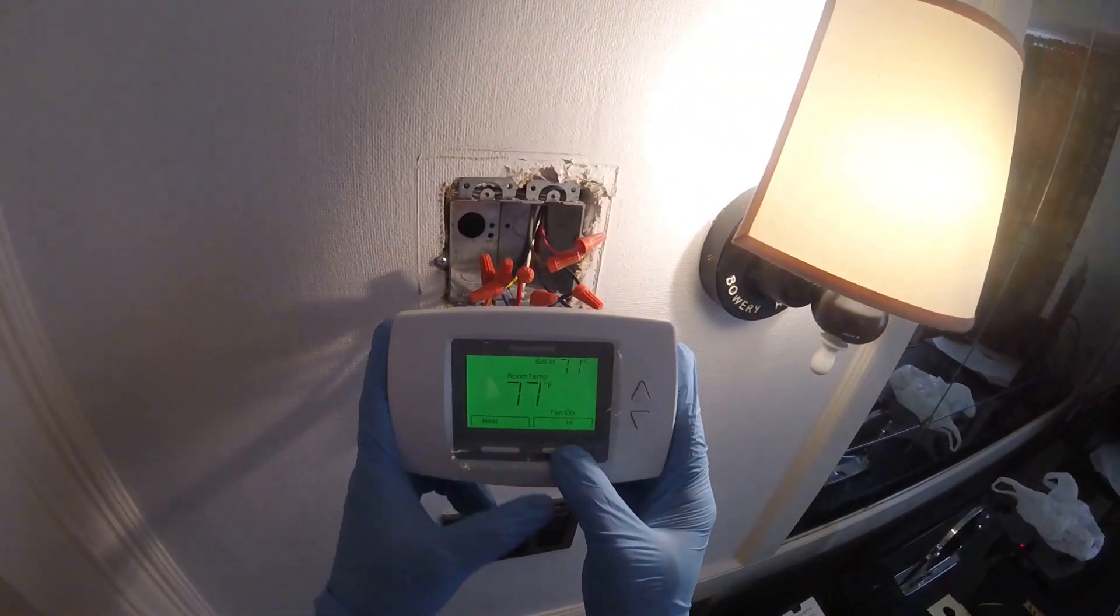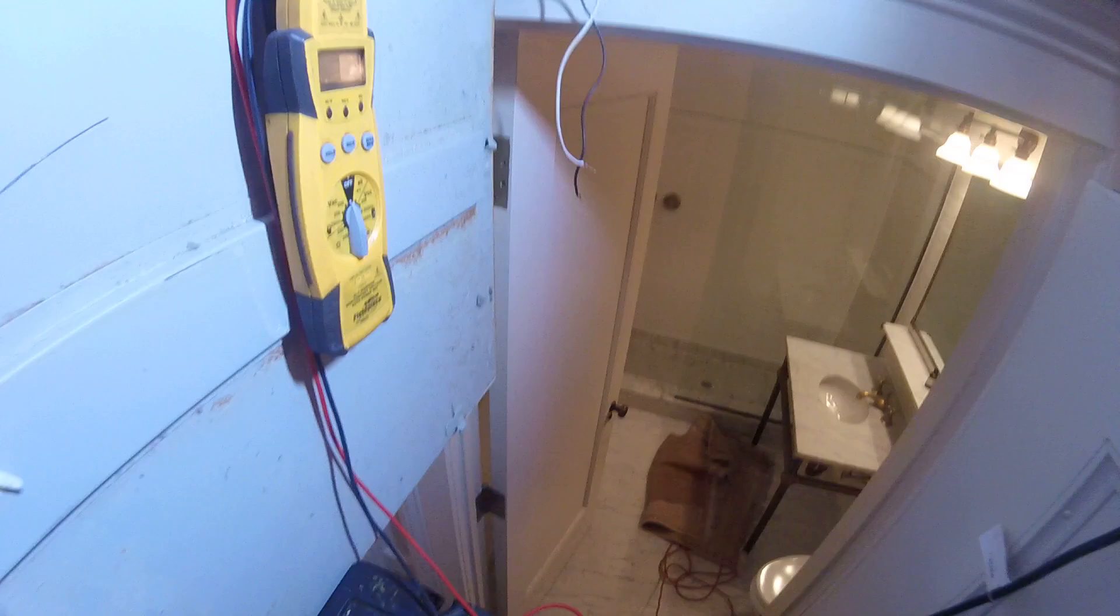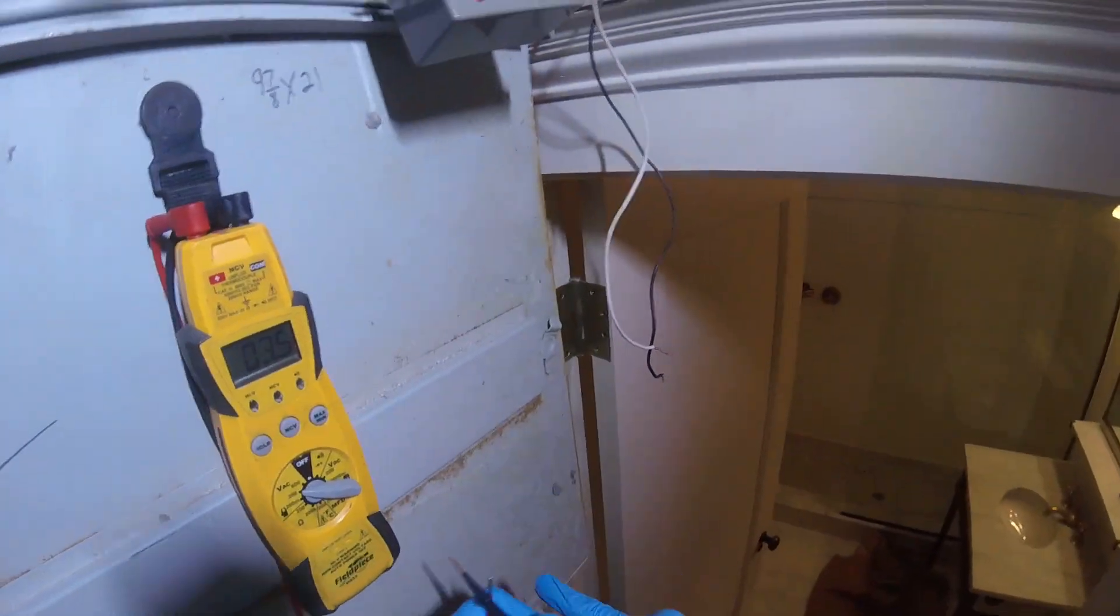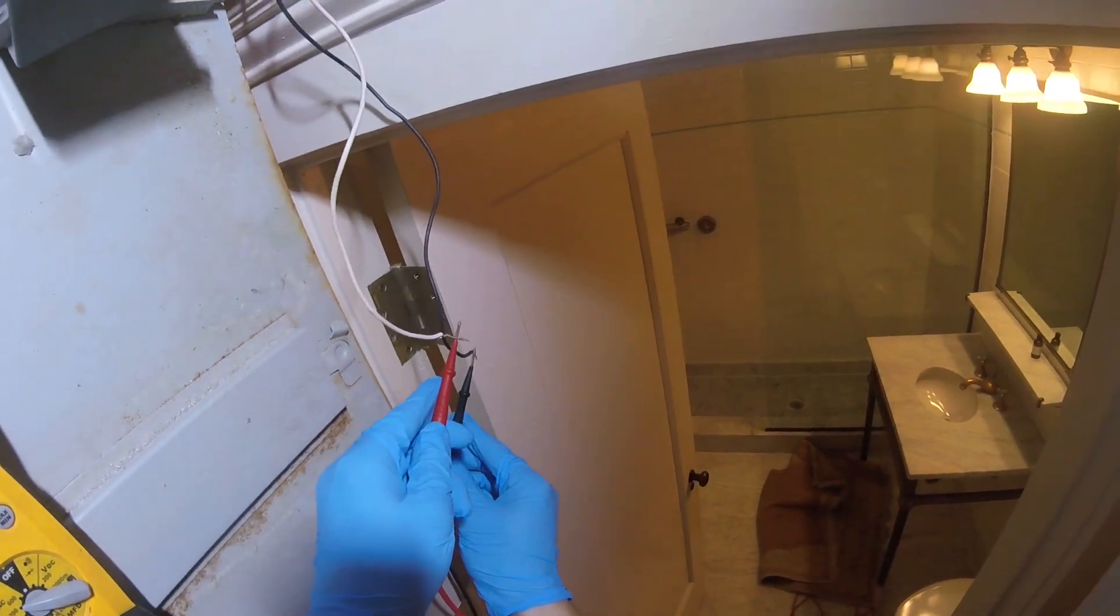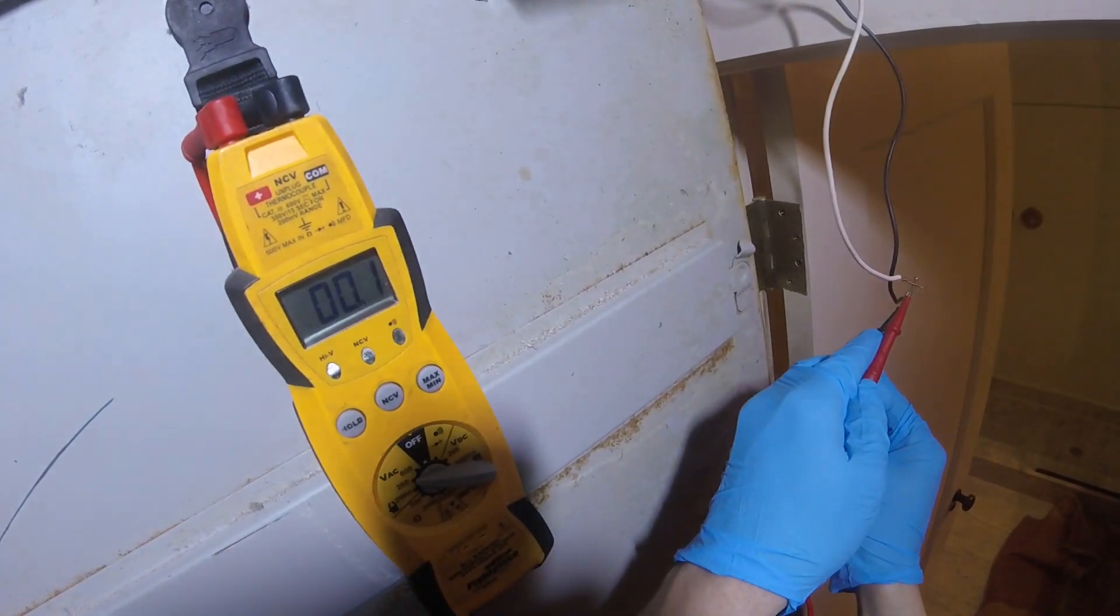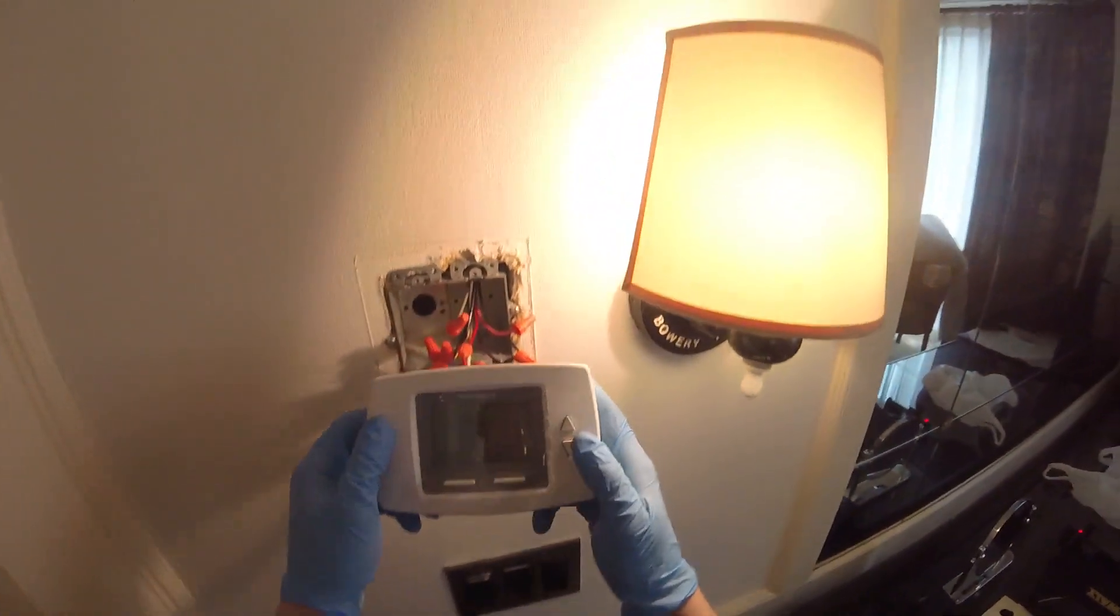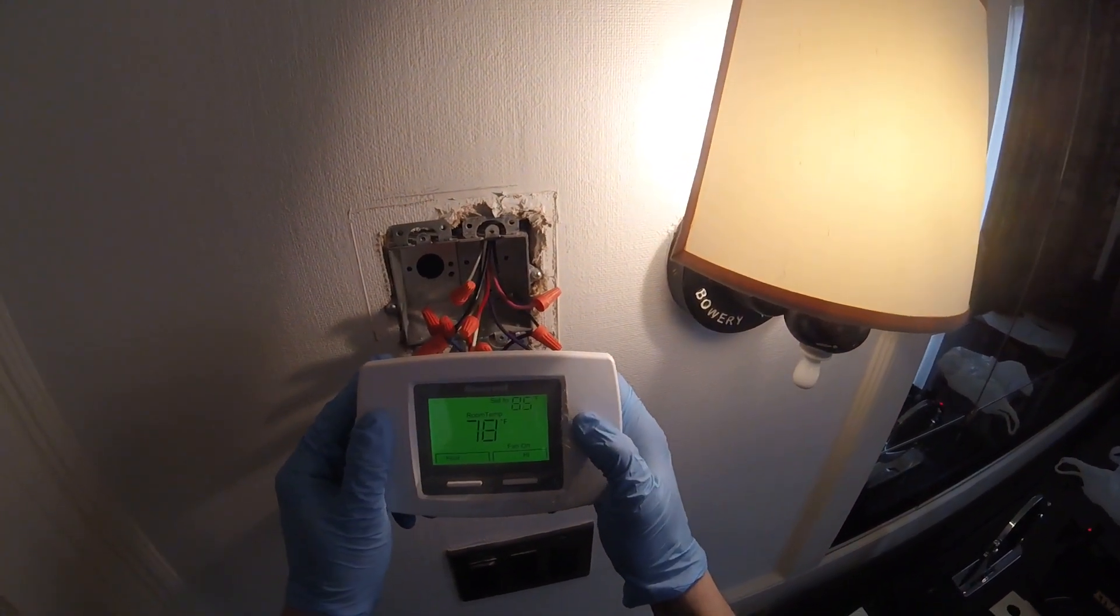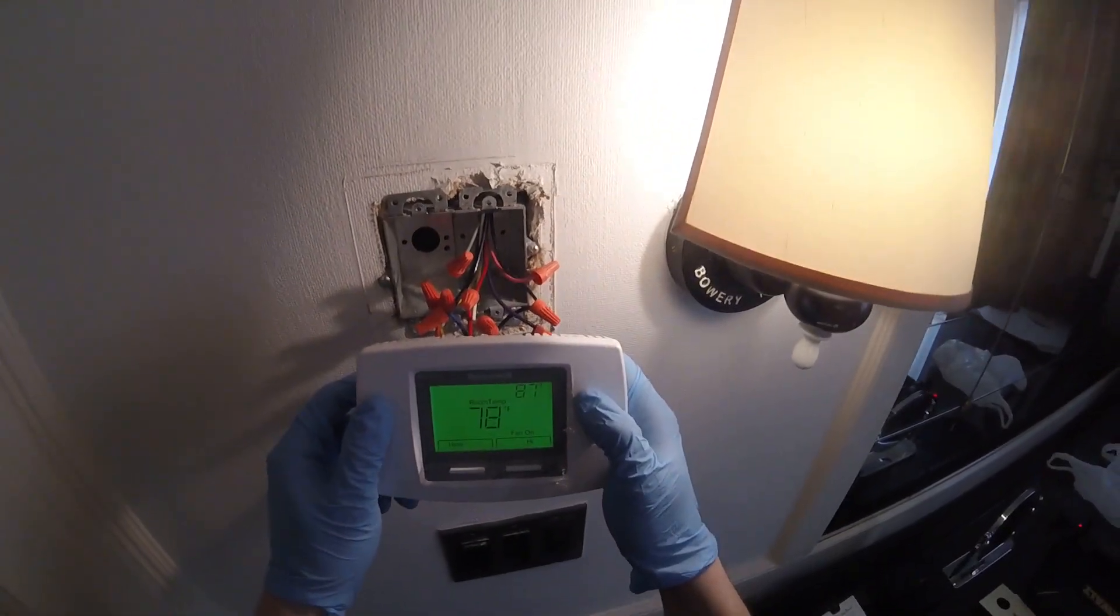Alright, we're set to heat, but our set point is below the room temperature. So let's see. Shouldn't be cooling. So I'm going to check between these two. Nothing. Let's set this thing to heat to see if that valve energizes. So I'm going to raise the set temperature above the room temperature.